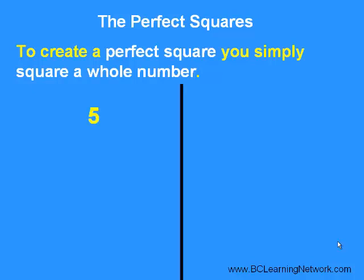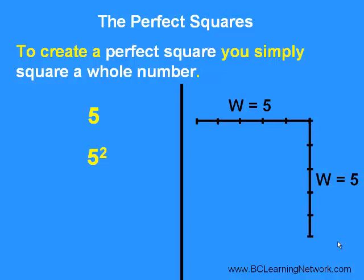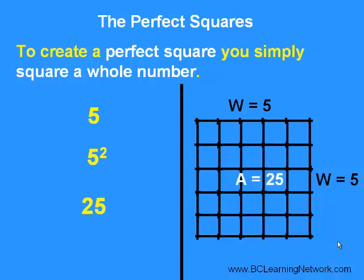The next whole number after 4 would, of course, be 5, which would correspond to a square having a width of 5. We'll square 5, which we know means 5 times 5, which of course is 25. And this would correspond to a square having an area of 25 unit squares or 25 square units.